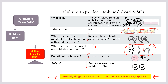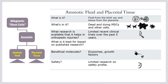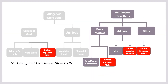Finally, amniotic fluid and placental tissue — just like the other birth tissue products we've discussed, it's all dead. It does have growth factors, which is the good news, but there's very limited research on what this is good for in the orthopedic space. The big picture: umbilical cord, Wharton's jelly, cord blood, amniotic fluid, and placental tissue all contain dead and dying cells — no living functional stem cells. So if you want living cells, the only legal source in the United States is your own bone marrow or adipose tissue.